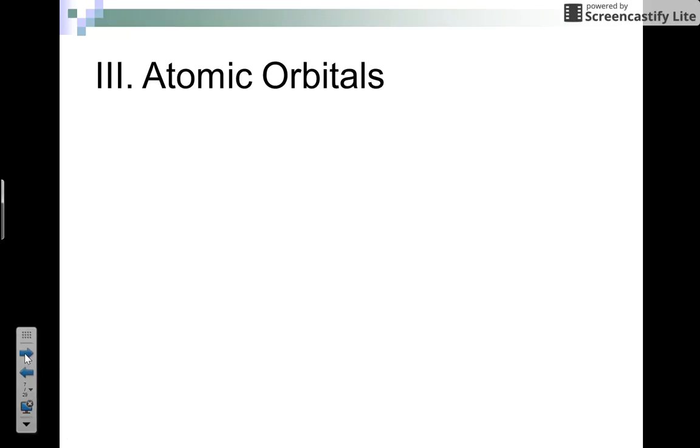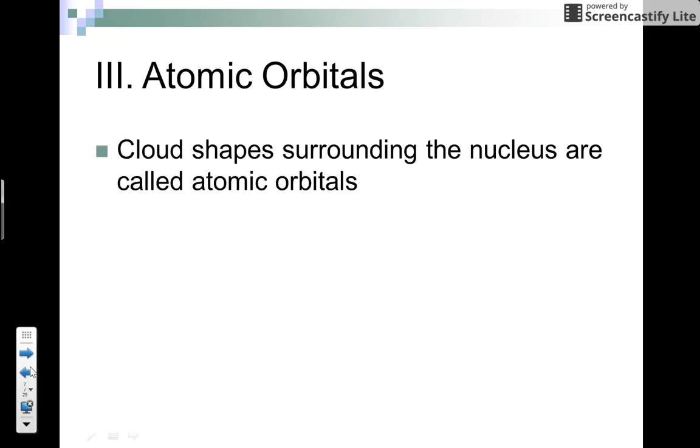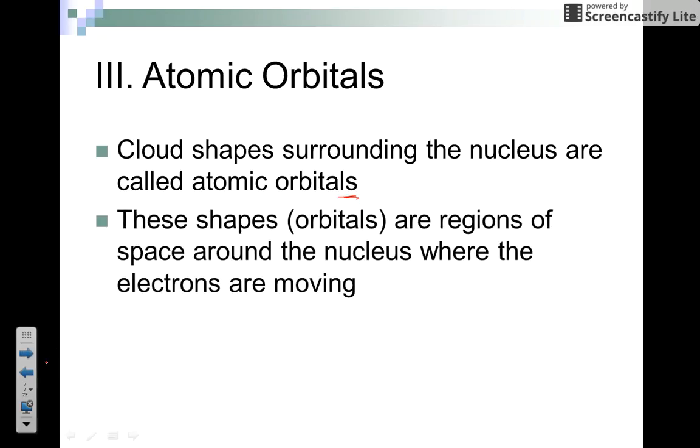The last thing is atomic orbitals. We'll stop here today and in the next lesson look at the actual quantum numbers. These are our cloud shapes that surround the nucleus—we call them atomic orbitals, not orbits but orbitals, meaning they're orbit-like but not perfect orbits, not perfectly spherical. These shapes or orbitals are regions of space around the nucleus where the electrons are moving, where they're most likely to be moving like that fan blade.